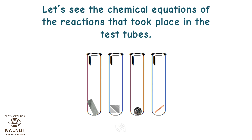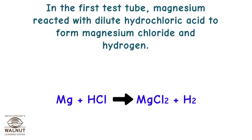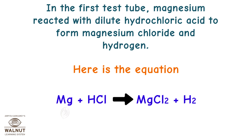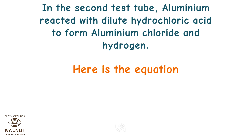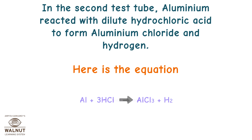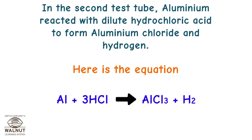Let's see the chemical equations of the reactions. In the first test tube, magnesium reacted with dilute hydrochloric acid to form magnesium chloride and hydrogen: Mg + 2HCl → MgCl₂ + H₂. In the second test tube, aluminium reacted with dilute hydrochloric acid to form aluminium chloride and hydrogen: Al + 3HCl → AlCl₃ + H₂.